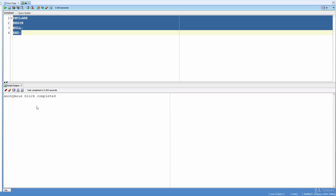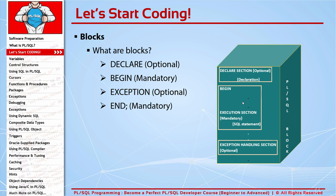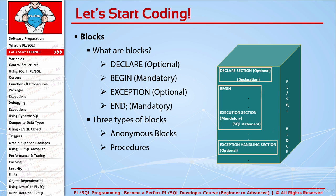Now let's continue with the types of PL/SQL blocks. There are three types of blocks, and every block must have a type. The three types serve different purposes: anonymous blocks, procedures, and functions.